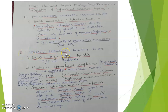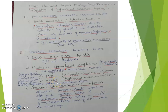Under neoplastic appendiceal mucinous lesions, there are three categories. First, serrated polyps of the appendix. Second, mucinous appendiceal neoplasms — further divided into low-grade appendiceal mucinous neoplasms (LAMNs) and high-grade appendiceal mucinous neoplasms (HAMNs). Third, mucinous adenocarcinoma of the appendix.